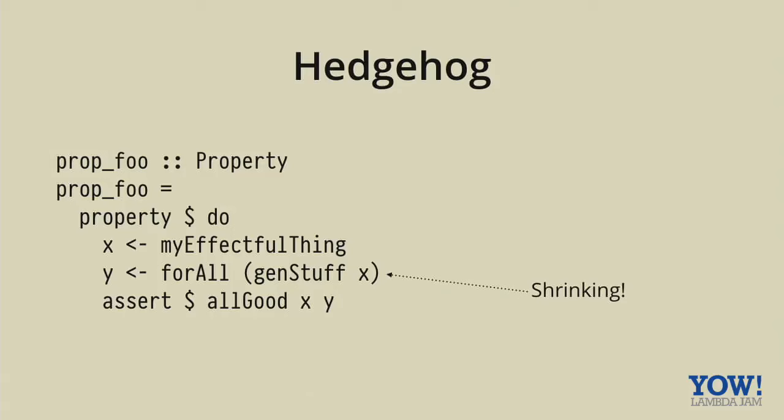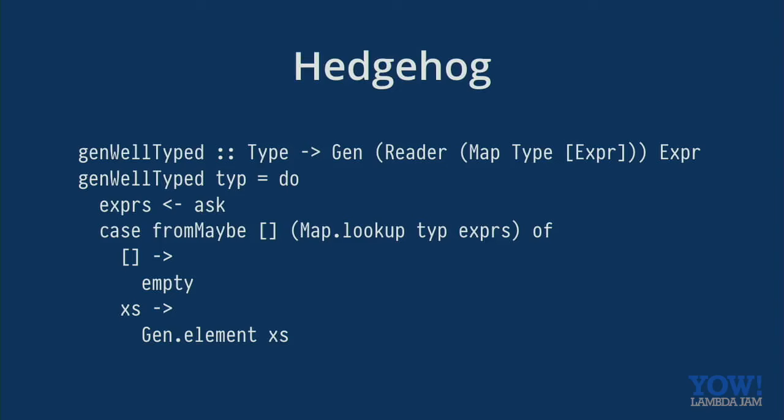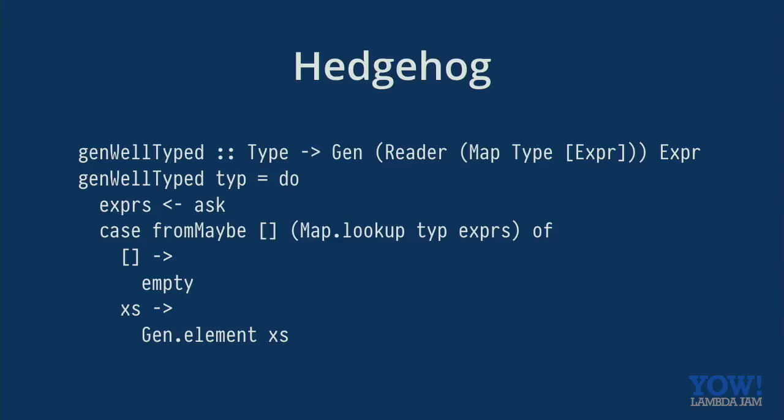So what else can you do with effectful generators? Well, one example, one of my colleagues, Tim came up with, so he was trying to test a compiler and he wanted to generate well typed terms. And so he would like to have a map of the environment where he's got all of the terms which match a particular type in this reader. And then he can use that to thread the map around at all, it's quite nicely. So, I'm kind of interested to see if anyone has other good uses for effectful generators. Yeah, I'm not sure how it'll pan out.